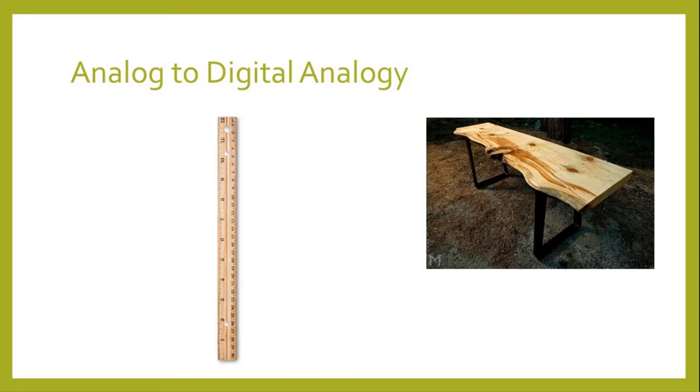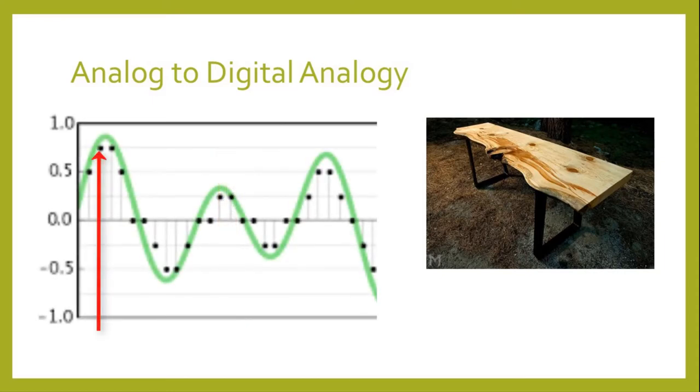Every time you take a measurement, you're taking a sample at that point or location. To cover the whole table, you sample at a fixed sampling interval. When you're done, you've converted the shape of the table into a series of numbers.